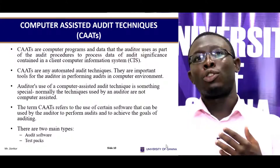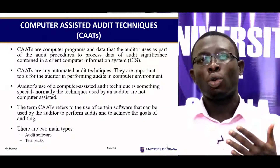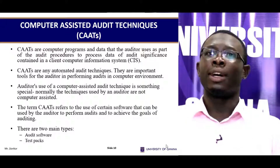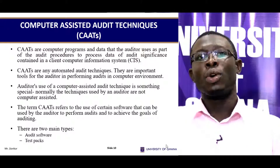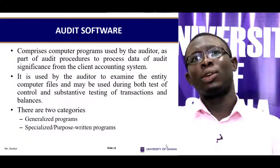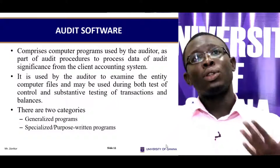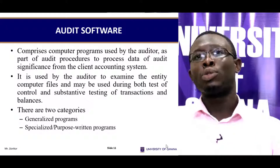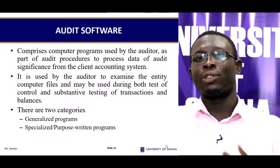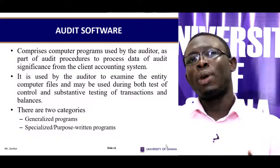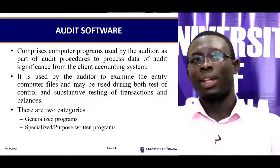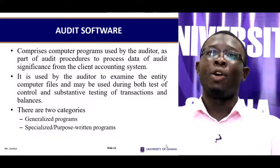There are two main types of CATs: audit software and test packs. The audit software comprises computer programmes used by the auditor as part of audit procedures to process data of audit significance from client accounting systems. It is used by the auditor to examine the entity's computer files and may be used during both tests of control and substantive testing of transactions and balances.